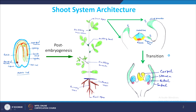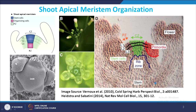Recalling the typical shoot system in a plant: in the shoot system during vegetative phase we have leaves and axillary branches, and at the apex we have the shoot apical meristem. When the transition occurs from vegetative phase to reproductive phase, this shoot apical meristem gets converted into inflorescence meristem, and then the inflorescence meristem makes the flower. These are the typical parts of the shoot system.